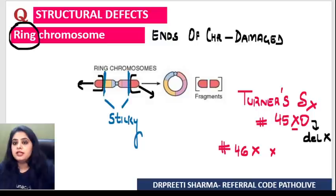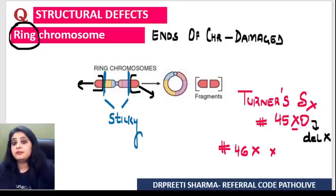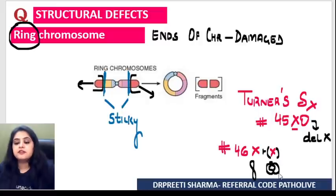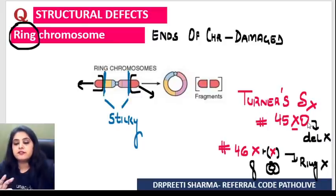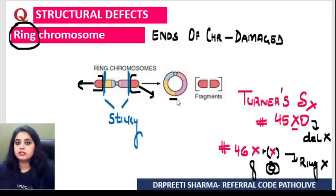But one X chromosome is normal and the other X chromosome is a ring chromosome. That ring chromosome is not functional. So there are two ways of having Turner's syndrome: one when the X chromosome altogether gets deleted, and the other when it's physically present but has taken the shape of a ring, so it's good for nothing.